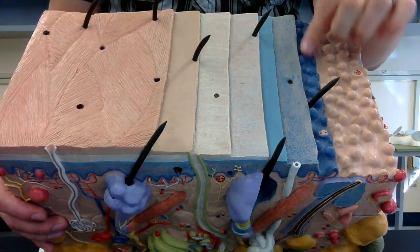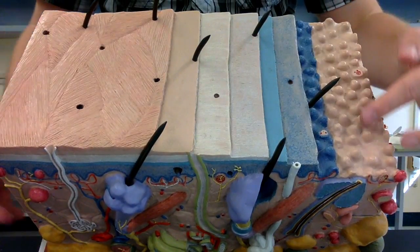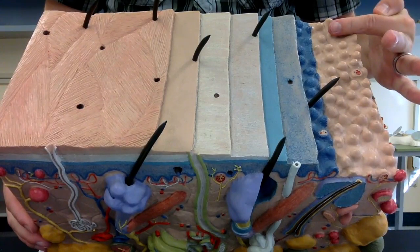Then this is that basal lamina, which is connecting, once again, these layers of the epidermis to the first layer of the dermis that you can see here.